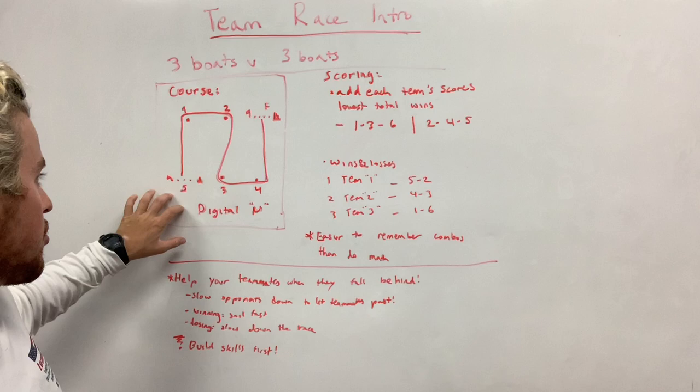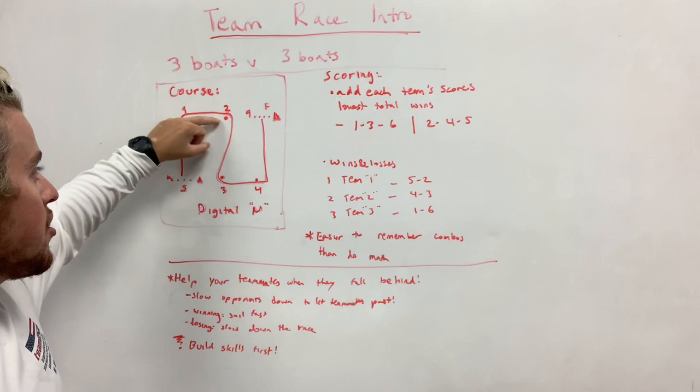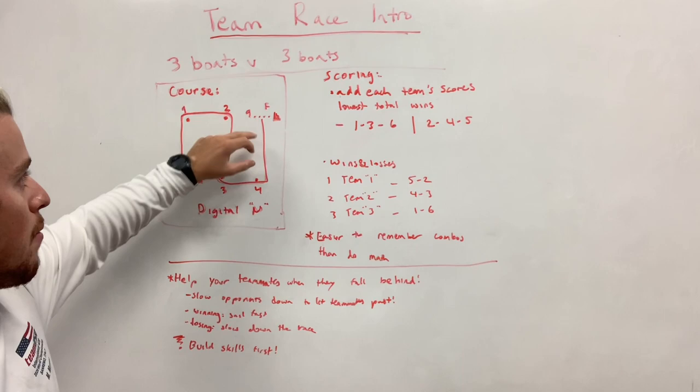We do it on a course called the digital end, which is right here. We'll start down here, go up to mark one, then to mark two on a reach, then back downwind to mark three, then another reach to mark four, and then a final upwind to the finish.